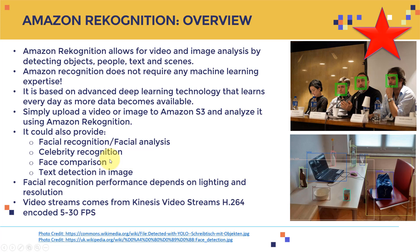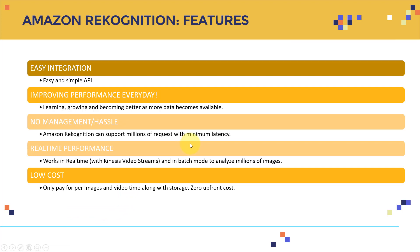It could be used for facial recognition, facial analysis, and celebrity recognition. For example, you can upload an image of Jeff Bezos and it can detect him right away. You can also do face comparison, text detection in images, and more. Facial recognition performance depends on lighting and resolution, so you have to be careful with that. Video streaming comes from Kinesis Video Streams and must be encoded at 5 or 30 frames per second.